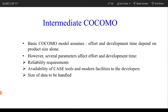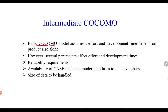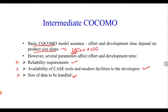Intermediate COCOMO is slightly more advanced than the basic COCOMO model, which assumes the product size alone, represented in terms of lines of code converted into kilo lines of code. However, there are various other parameters which affect the effort and the development time — such as reliability requirements, availability of CASE tools and modern facilities, or the size of the data to be handled. Basic COCOMO depends simply on lines of code to calculate cost, development time, and development effort.